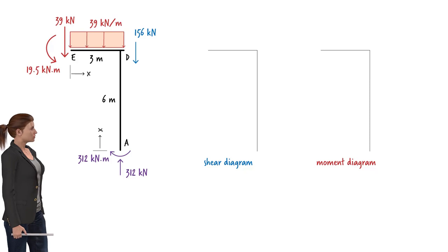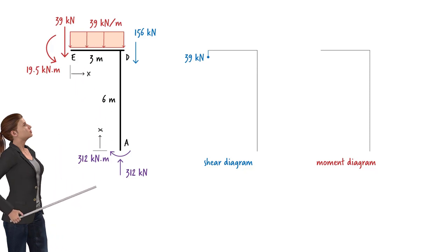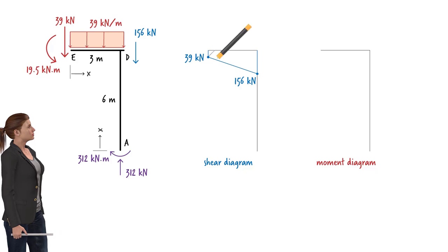For the beam, shear at the left end of the segment is negative 39 kN. We can calculate the shear force at the right end of the segment by adding the area under the load diagram to 39. 39 plus 39 times 3 gives us 156. So shear at the right end of the beam segment, just to the left of point D, equals negative 156 kN. We can connect these two points using a straight line. So this constitutes the shear diagram for the entire segment.